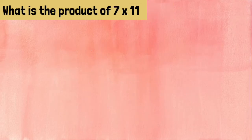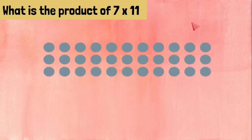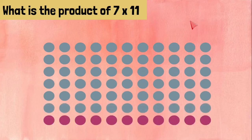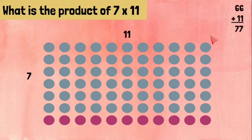What is the product of 7 times 11? We need 7 rows with 11 on each of them. We can take the 66 blue ones and add 11, which gives us 77.